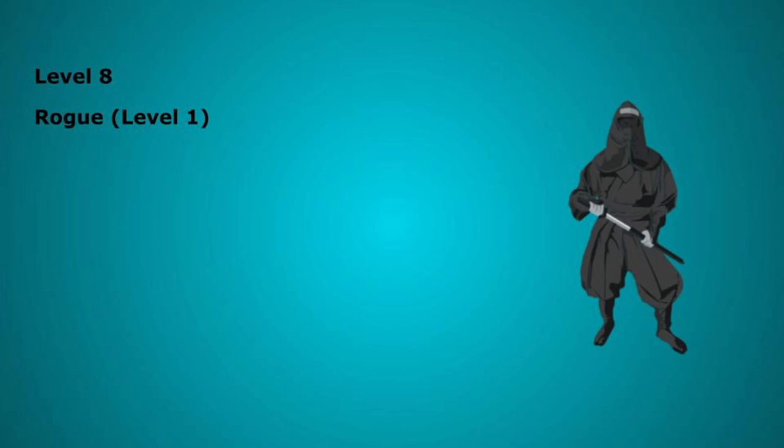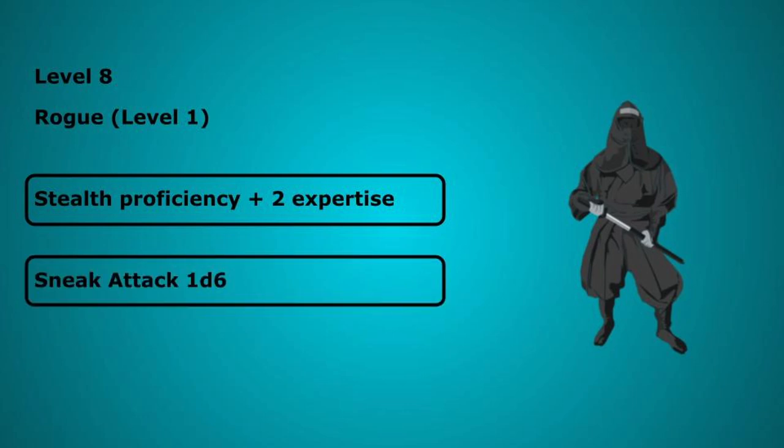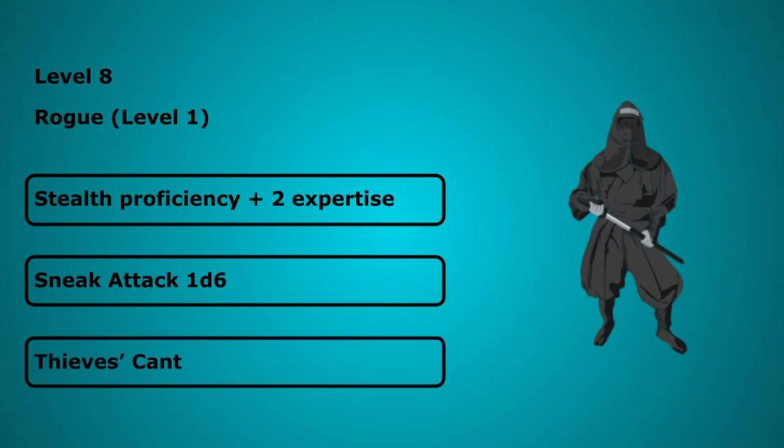Level 8 is our first level in Rogue. You gain an additional skill proficiency picking up stealth and 2 expertise options going into Athletics and Intimidation. We also get the Sneak Attack feature. Sneak Attack can deal extra damage once per turn on an attack made with a finesse or ranged weapon as long as you had advantage on the attack roll. Your whips are finesse weapons that you are using your strength modifier with and as you will likely be using reckless attack all the time you will always have advantage.